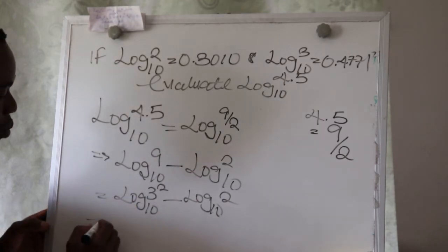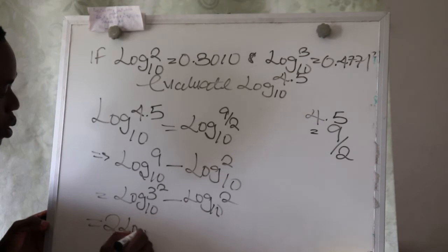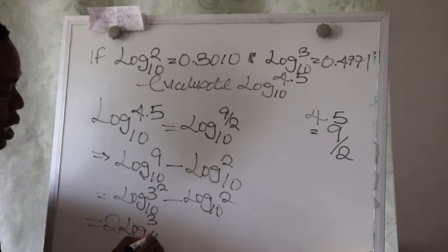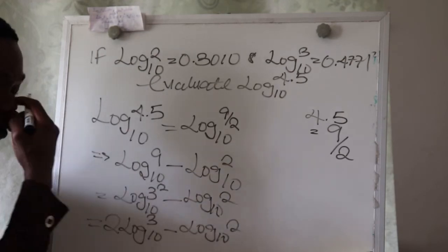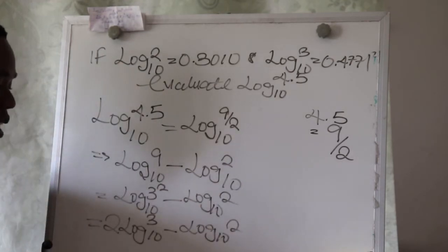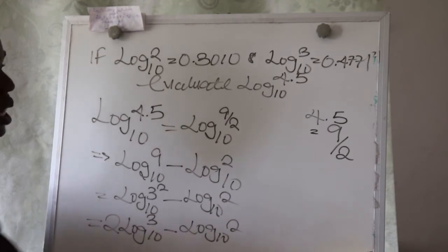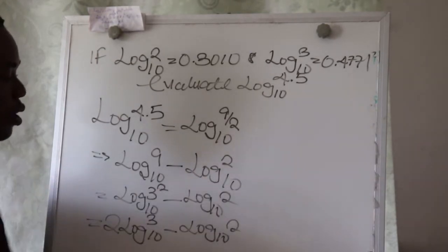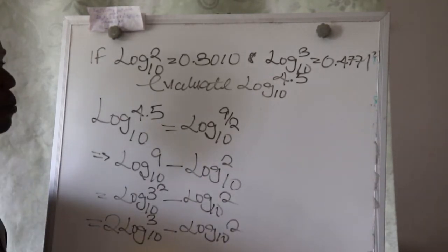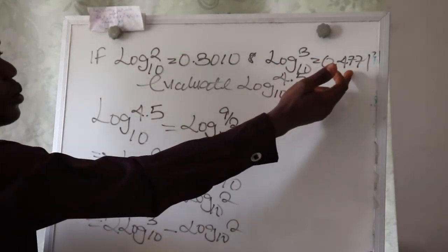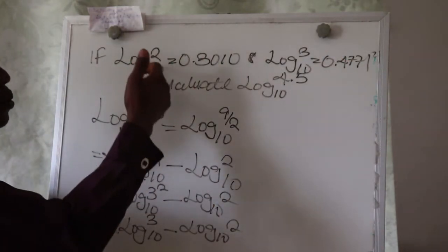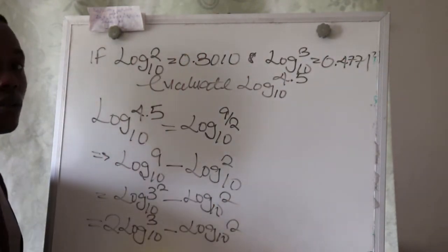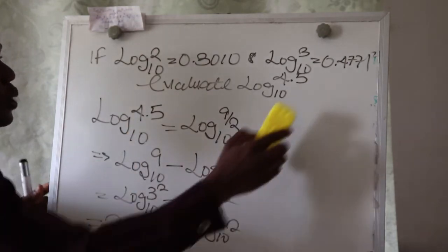This will now be equal to 2 log 3 base 10 minus log 2 base 10. Now this is exactly all we need to do. Remember in your question they told us log 3 base 10 is equal to 0.4771 and log 2 base 10 is equal to 0.3010.